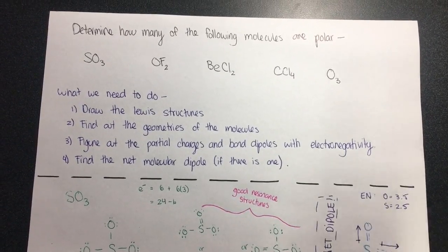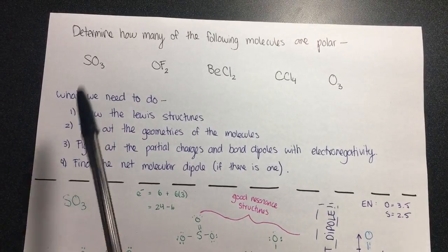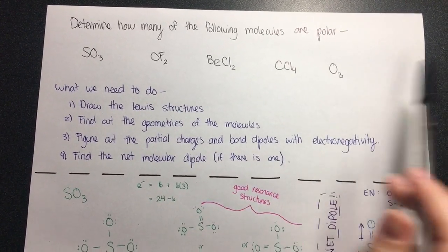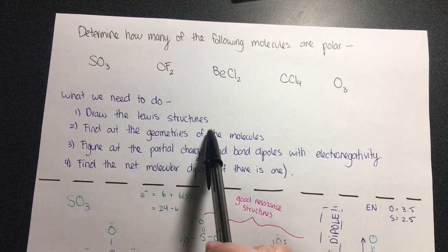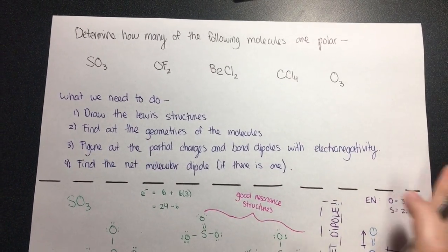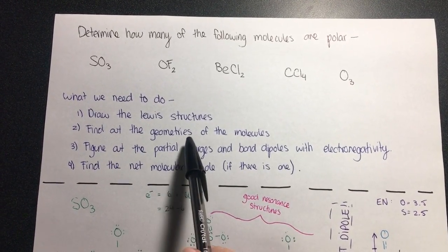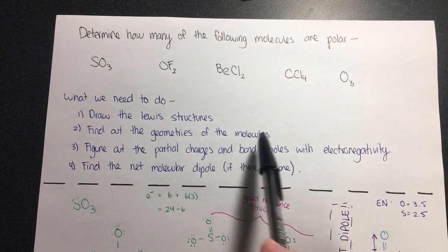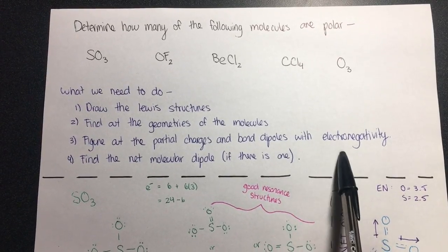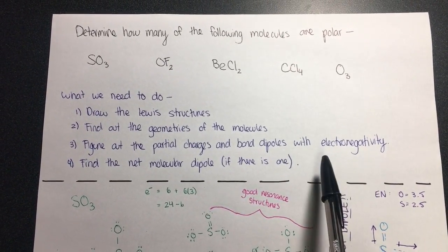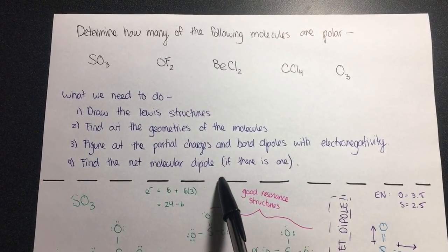For this problem, we're asked to determine how many of the following molecules are polar. First, we need to draw the Lewis structures of the molecules so we can see what they look like. When we see how many domains there are, we can figure out the geometries of each molecule. With that, we figure out the partial charges and bond dipoles using the electronegativity of each atom, so we can find the net molecular dipole if there is one.